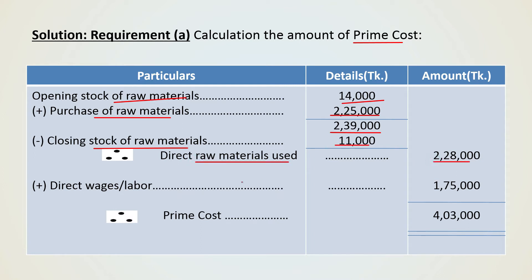Now plus direct wages or direct labor: 1,75,000 taka. Other direct expenses are missing here. So 2,28,000 taka plus 1,75,000 taka — prime cost amount is 4,03,000 taka.